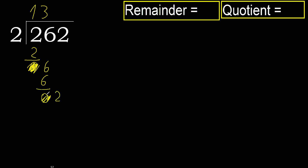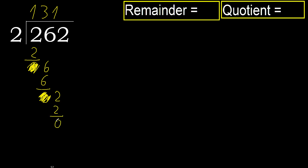Bring down the 2. 2 multiplied by 1 is 2, which is not greater. Ok. 2 minus 2 is 0. Next. There is no more number, therefore finish it.